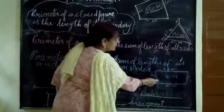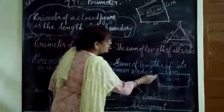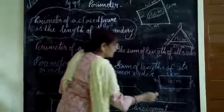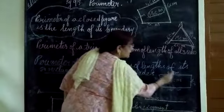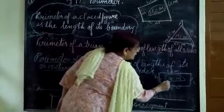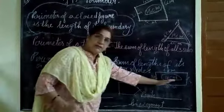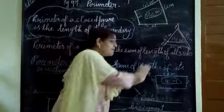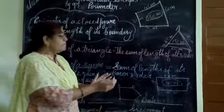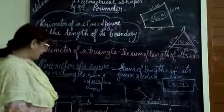Now, this is a rectangle. This side is 6 centimetres, the opposite side is also 6 centimetres. This side is 3 centimetres, and opposite to this is also 3. So, 3 plus 3 is 6, and 6 plus 6 is 12. If we add all four sides, we get 18 centimetres. The sum of its total boundary — however many sides we have — we add them and get the perimeter of that figure.